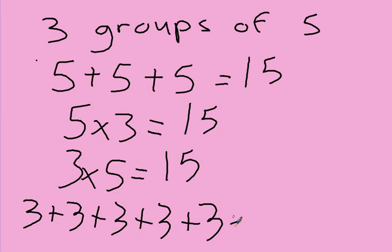Plus one more three — and that's going to equal fifteen too. So if we have three groups of five, just take how many we have in each group and add how many groups we have. That's basically multiplication — we're adding the same number over and over and over again.